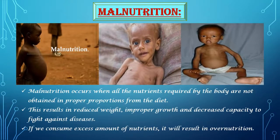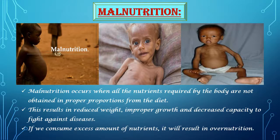Now, what is malnutrition? Malnutrition occurs when all the nutrients that the body needs are not obtained in the proper proportions from the diet. This happens when a person does not get sufficient food or when the diet is not balanced, and this results in reduced weight, improper growth and decreased capacity to fight against diseases. If we consume excess amount of nutrients, it will result in over-nutrition.